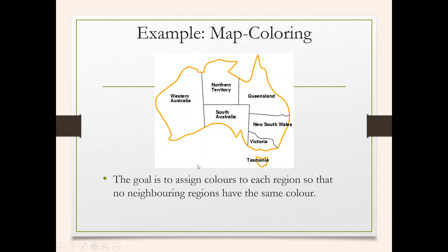If we assign one color to Northern Territory, then its neighboring regions — Western Australia, South Australia, and Queensland — should have different colors. So for any one particular region, the color should be different from its neighboring regions. If we can color the whole map maintaining this constraint, then the constraint satisfaction problem will be solved.